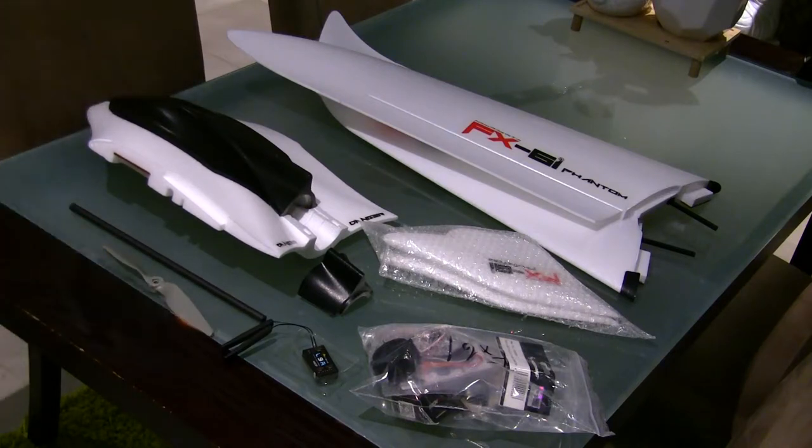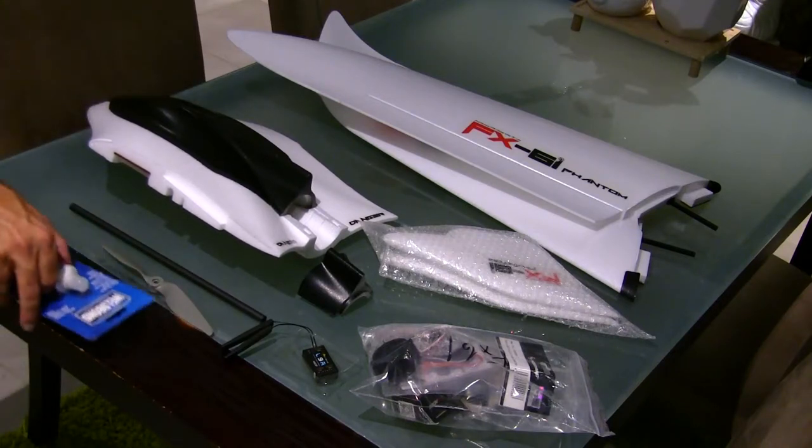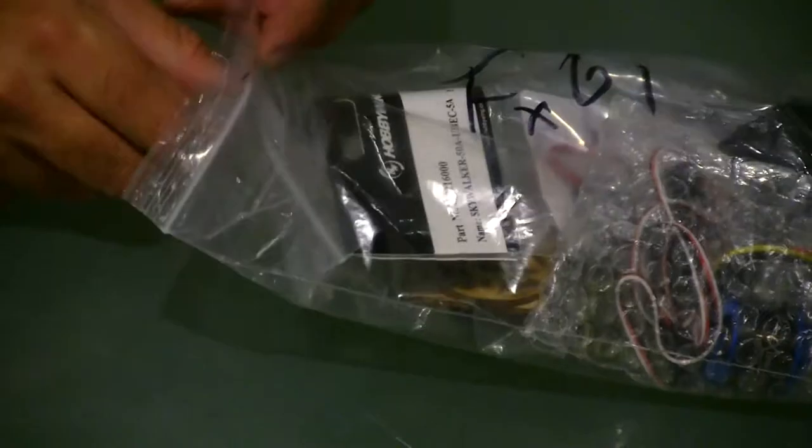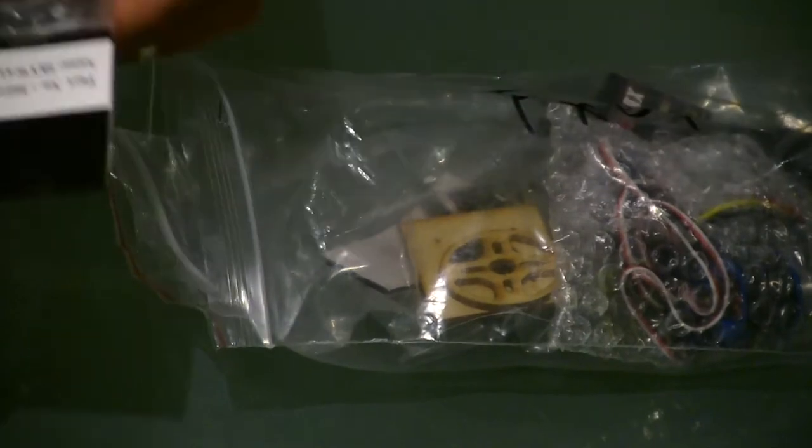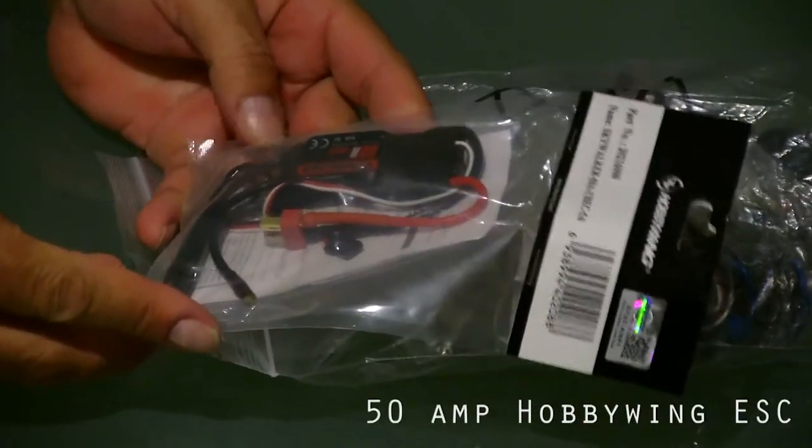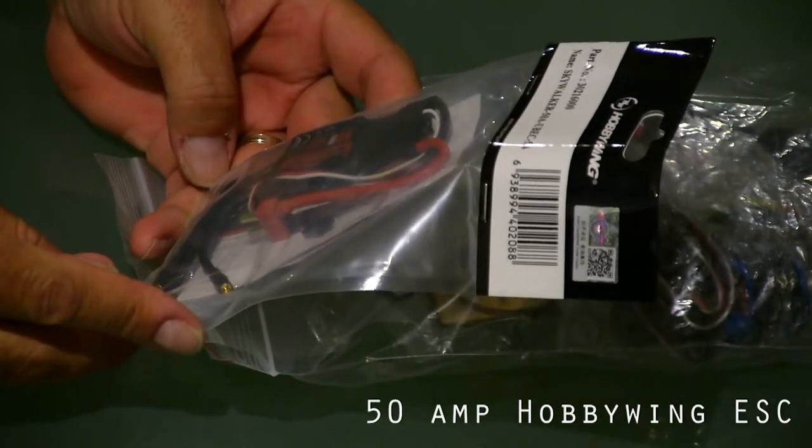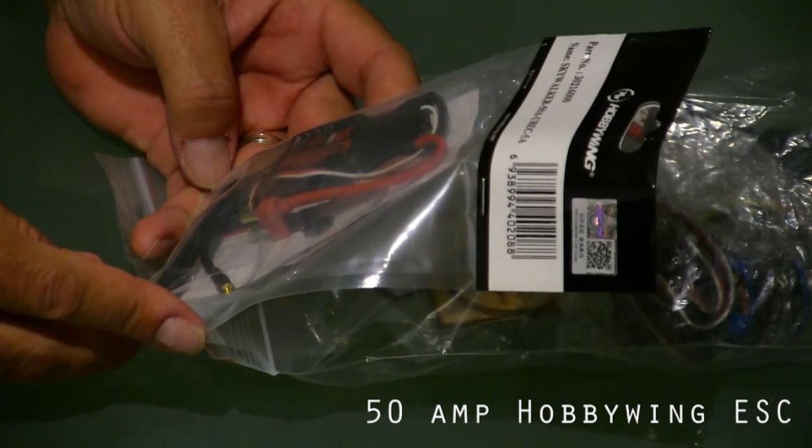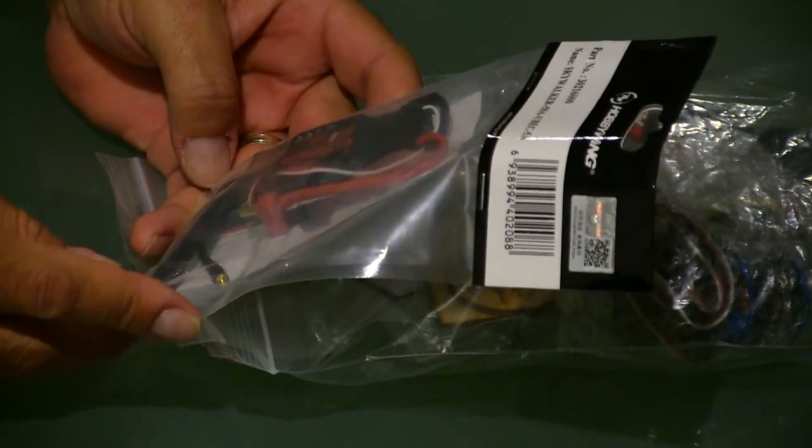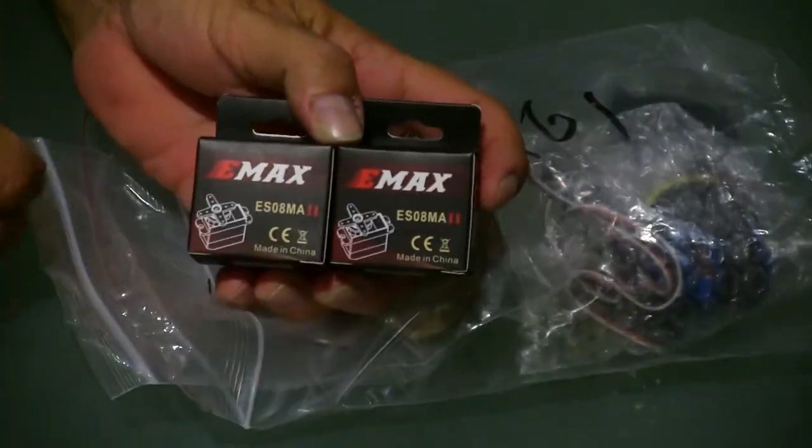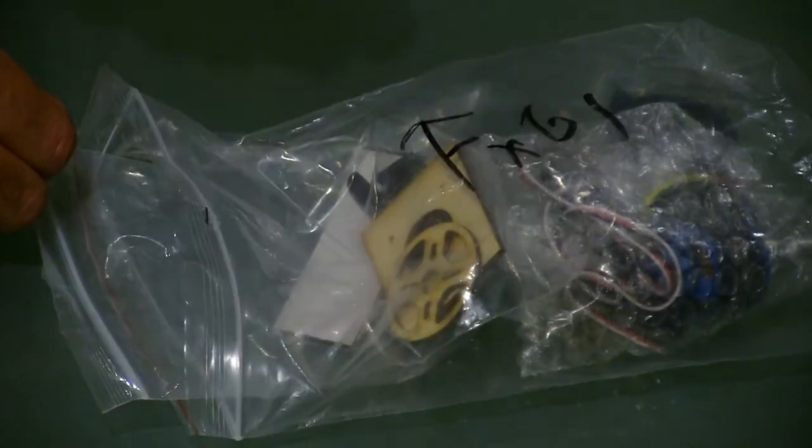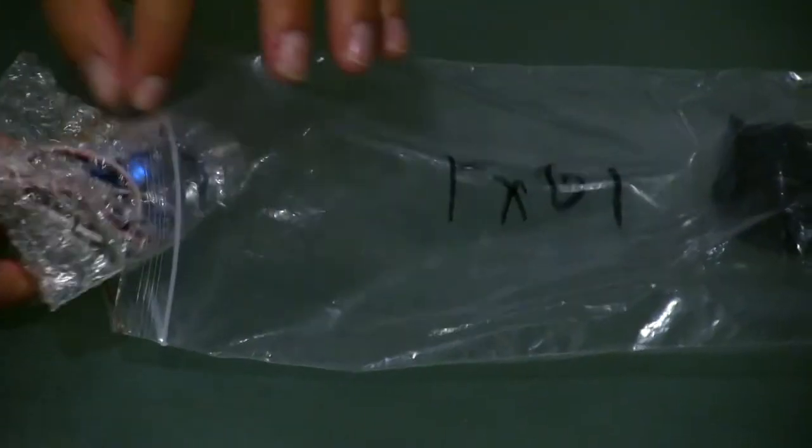It comes with an ESC, it's an Emax 50 amp ESC. I've noticed that varies with the kit depending where you are. The servos are Emax as well, two servos you get. In this kit you get all your mounts as well, the motor is also in there.